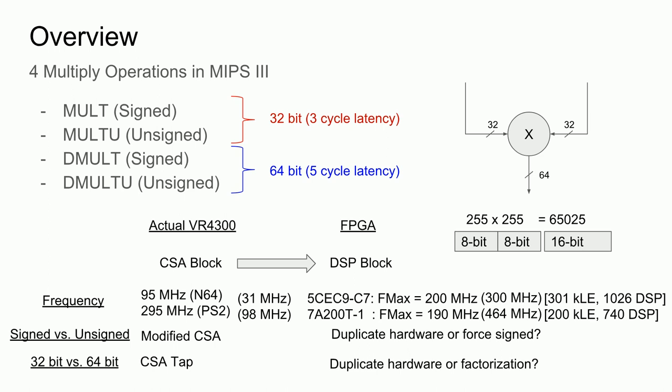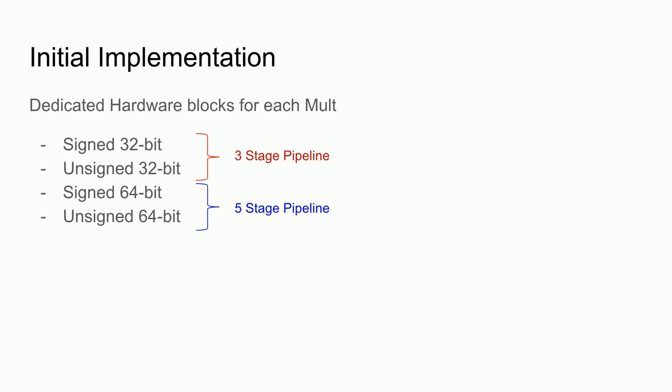The FPGA DSP block, however, cannot do this, since there is no access to the internal signals of the DSP block. So this means that we either need to one, duplicate the hardware again, or two, implement a tap ourselves by intercepting the 64-bit value, which can easily be done via factorization. Hopefully you can see that there are several options, which each trade off resource usage and speed. Note that other components of a game console hardware emulator will need to use the DSP blocks as well. So resource usage is something that we want to carefully consider.